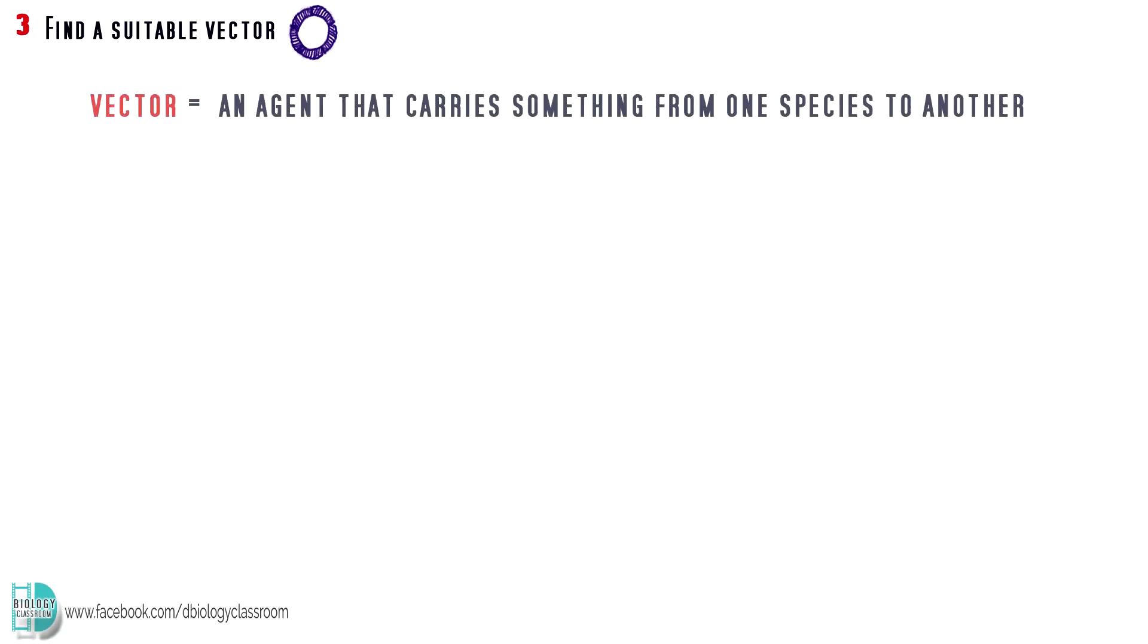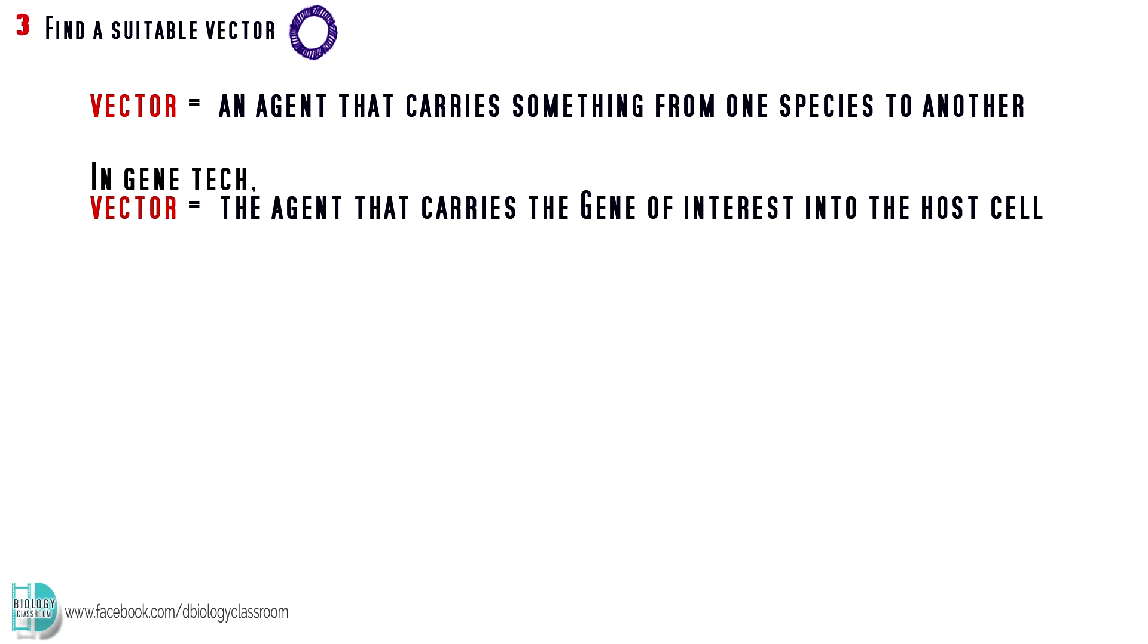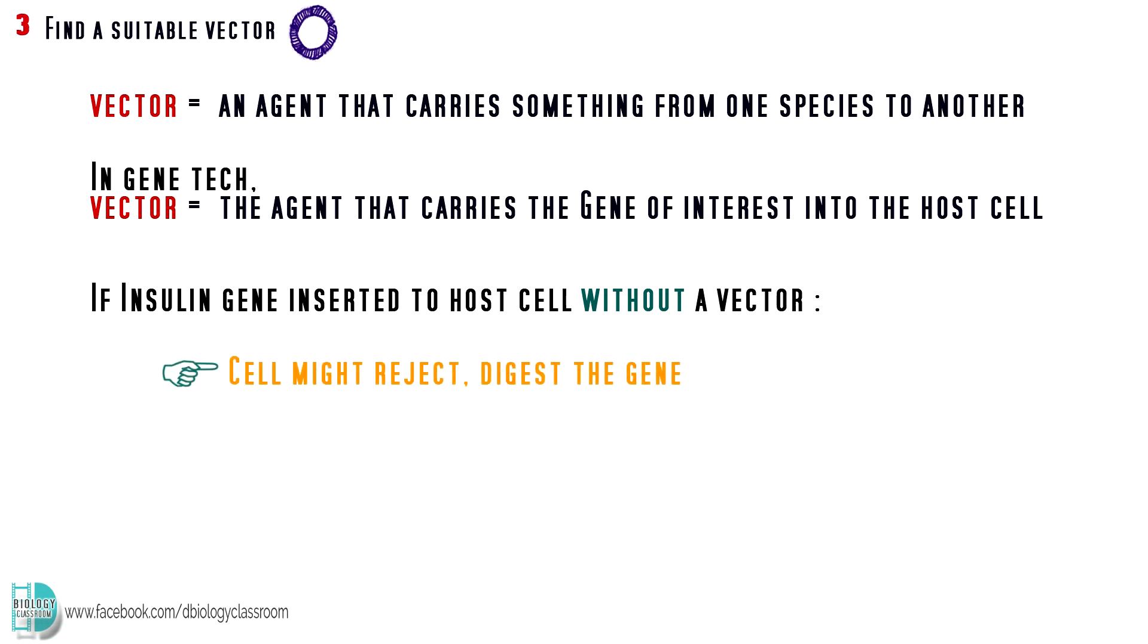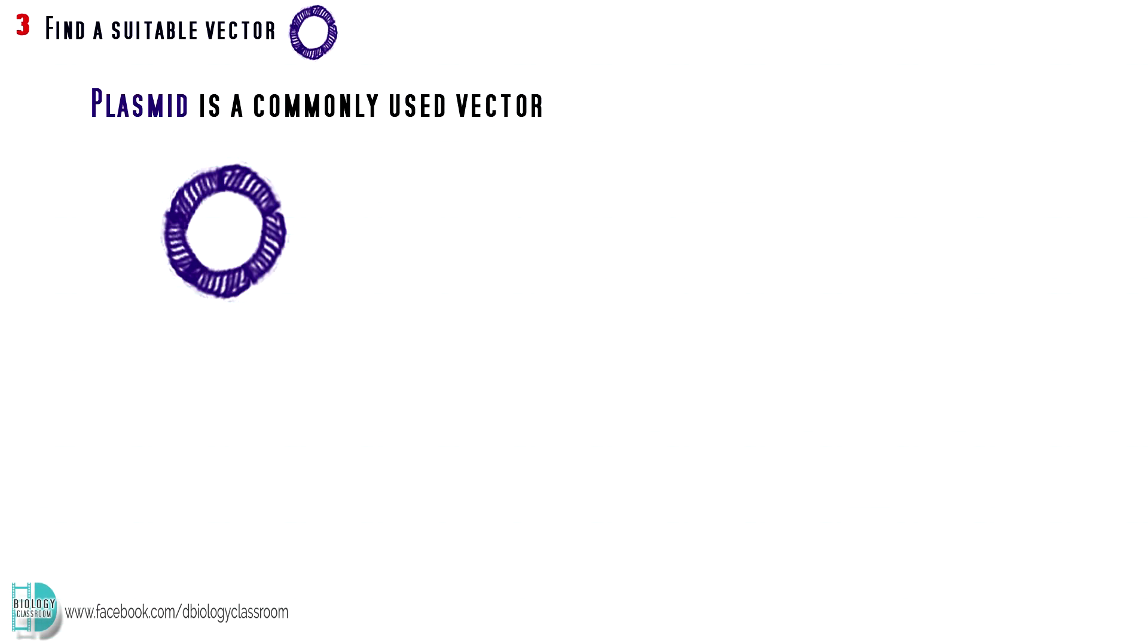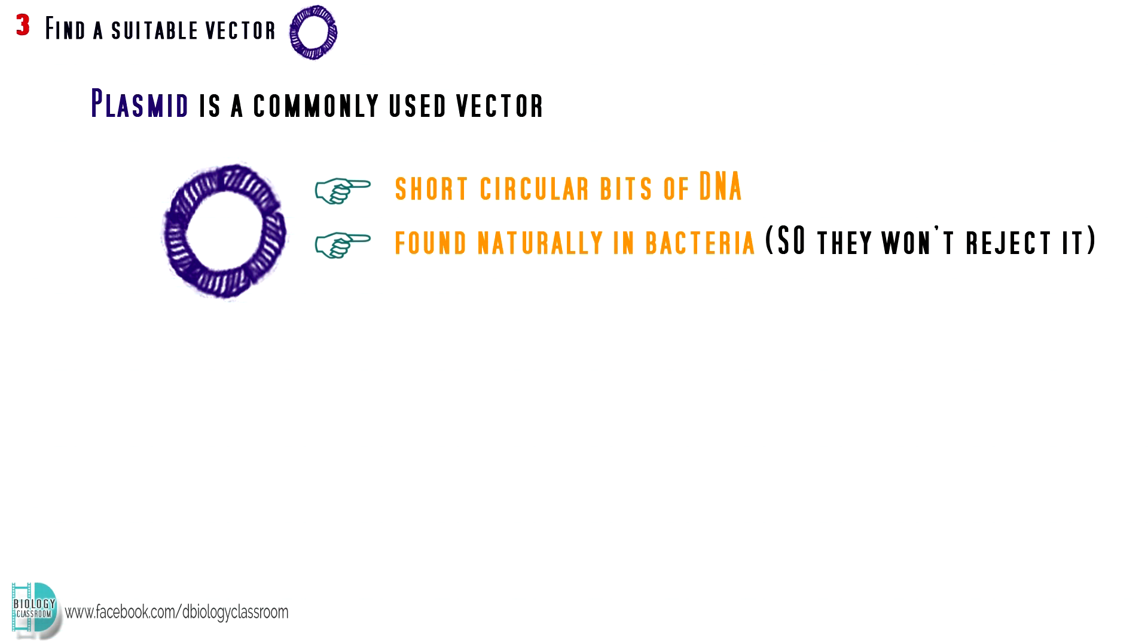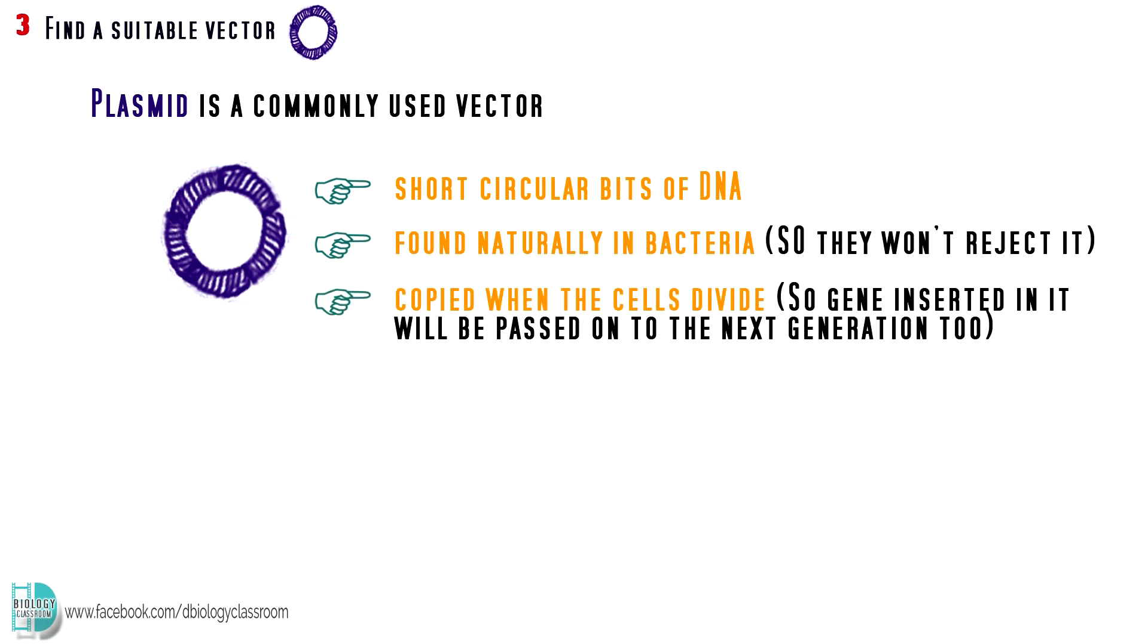In biology, a vector is an agent that carries something from one species to another. So, in this case, vector is the agent we use to carry the gene of interest into the host cell. We can't insert the insulin gene directly into the bacterium. It means nothing to them. They might just break it down, and they will not express the gene. That's why we need to insert it in a vector before we introduce it to the host. The most commonly used vector is a plasmid. It is a short circular bit of DNA found naturally in bacteria. Plasmids are copied when the cells divide. So, if you insert an insulin gene into the plasmid, the cell will pass it to the next generation.